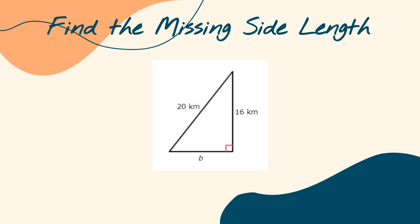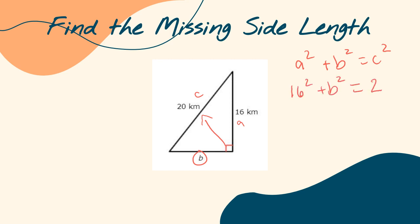Next question, same process — I need to find the missing side length. I have B that I don't know. Which one of these side lengths would be C? 20. Which would mean that A is 16. I know that 20 is C because it's opposite the right angle, and also because it's the longest side length. Using the Pythagorean theorem, A squared plus B squared equals C squared: 16 squared plus B squared equals 20 squared.